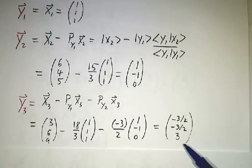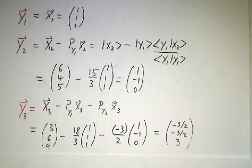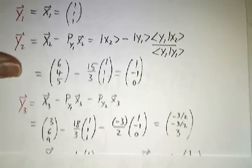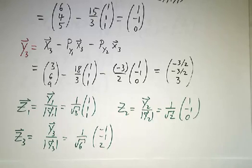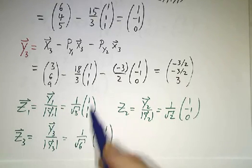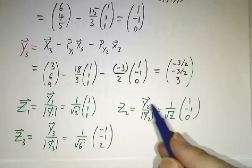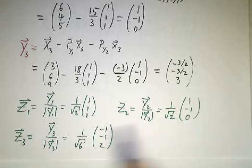And you can check that that's orthogonal to (1, 1, 1) and it's orthogonal to (1, -1, 0). So there's our orthogonal set. Now it's not orthonormal. To make it orthonormal, you just divide by the lengths. You let z1 be y1 divided by the length of y1, and that's 1 over root 3 times y1. z2 is y2 over the length of y2. z3 is y3 over the length of y3, which after a little bit of algebra, turns into 1 over root 6 times (-1, -1, 2).